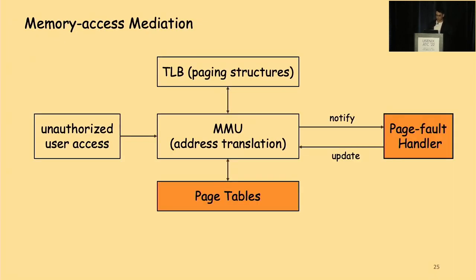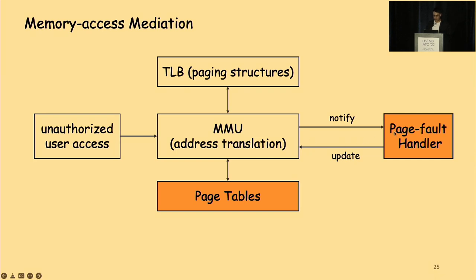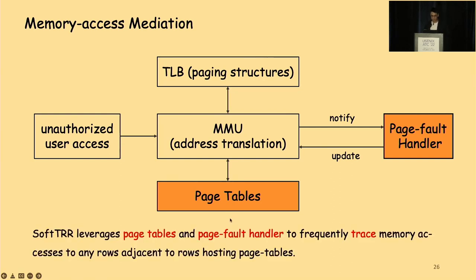MMU and OS kernel work together to enforce memory access mediation. Page tables dictate access permissions to each physical page, and an unauthorized access means a user access to a virtual page violates the dictated permissions. This raises a page fault captured by the MMU. In response, the MMU switches process context to the kernel, the page fault handler is invoked based on a hardware-generated error code, and then the handler asks the MMU to update the TLB and page tables accordingly. Soft TRR leverages page tables and the page fault handler to frequently trace memory accesses to any rows adjacent to rows hosting page tables.